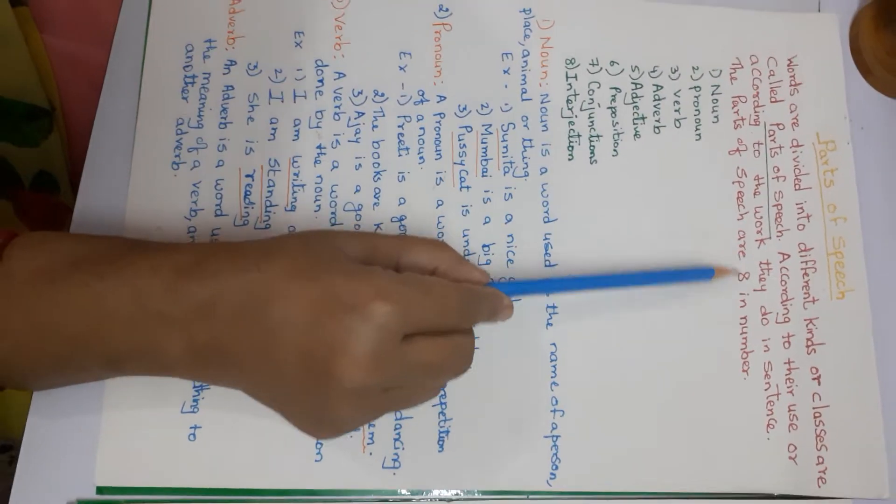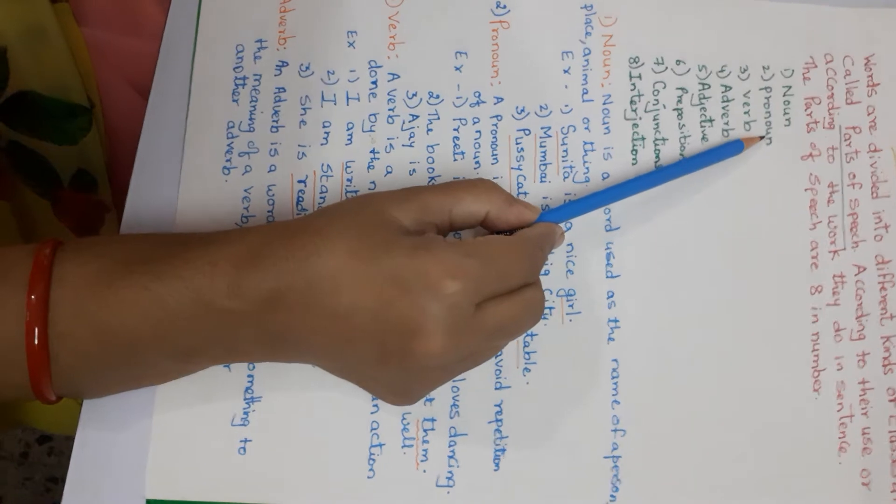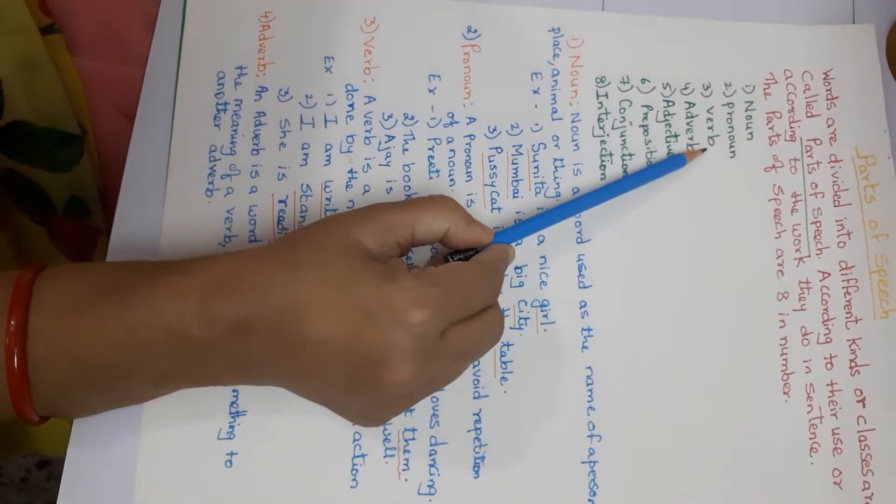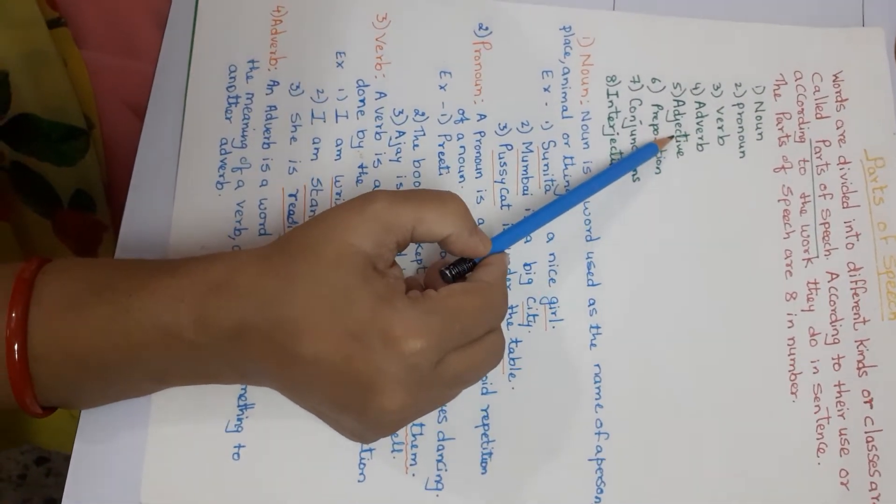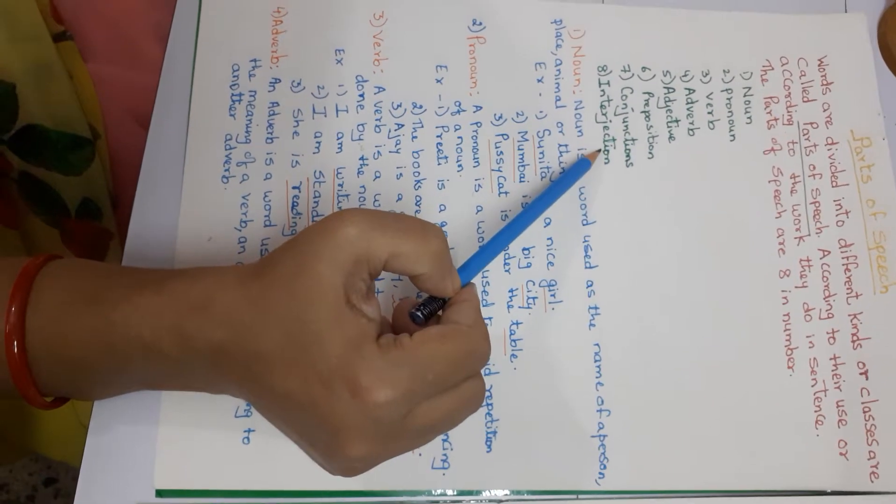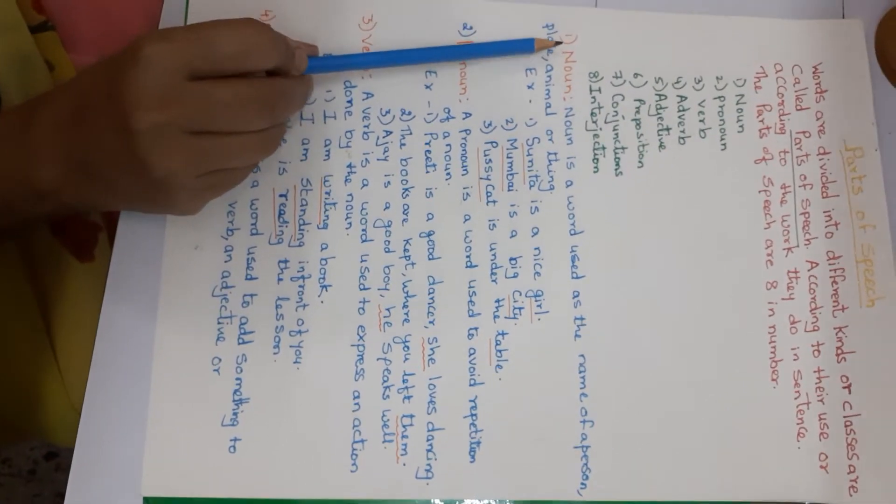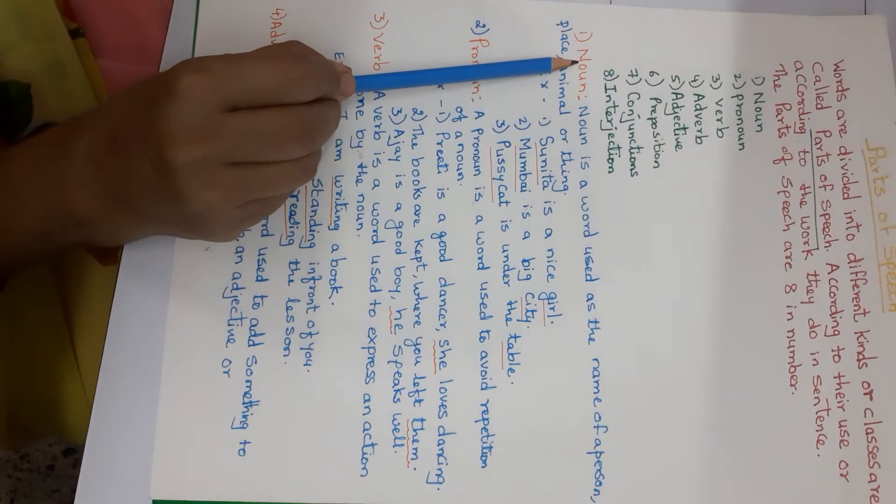The parts of speech are eight in number. First is noun, second pronoun, then verb, adverb, adjective, preposition, conjunction and interjection. Now let's go to the verb. First we will go to the noun.